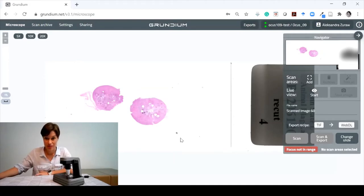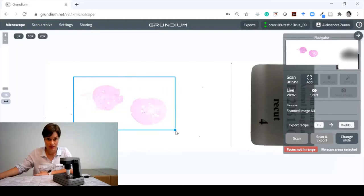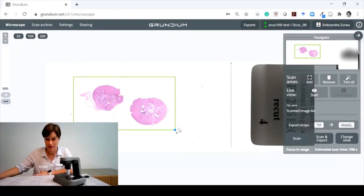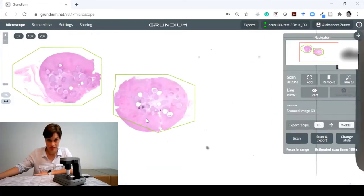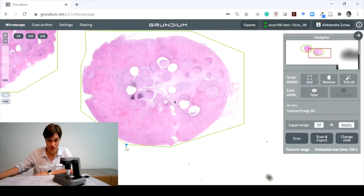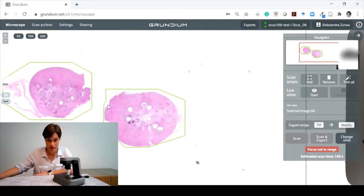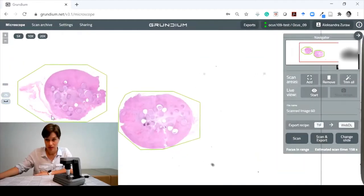The first thing we want to do is add scanning areas. We don't want the whole white space to be scanned. So we're adding scan areas. We have this blue dot and we mark the scan area. But we can refine it even more by clicking trim all. It's trimming these tissue pieces automatically, and we can obviously adjust it if it's not perfect. We can adjust however we want, but this looks pretty good.